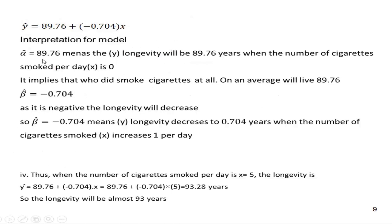Alpha is the intercept — the value of y when x is equal to zero, or the average value of y. This means longevity will be 89.76 years when the number of cigarettes x is zero — that is, somebody who did not smoke at all has a higher chance of living longer. On average, somebody who does not smoke is going to live 89.76 years. That is the longevity will be 89.76 years.